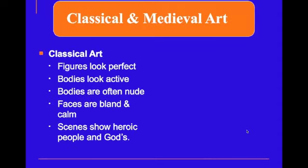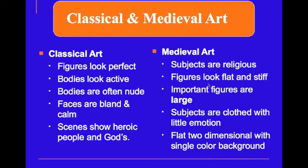Now let's compare classical art with medieval art. Subjects are religious in medieval art, for the most part. They look flat and stiff — there's really no dimension. Even if there is some suggestion of dimension, it doesn't appear lifelike at all. Important figures are larger than less important ones; it's called hierarchy of scale. Subjects are clothed with little emotion, usually just straight-faced. And again, flat two-dimensional with a single color background, usually gold.